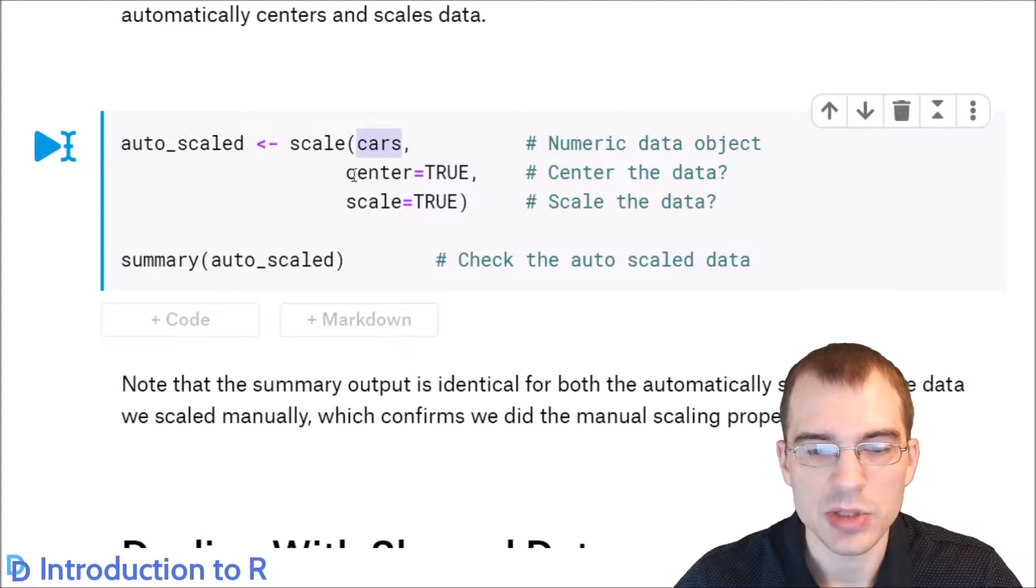Then you say do you want to center the data? If you do put true and if you want to scale the data set that argument to true. Then you simply run it and the data will be automatically scaled. Let's run this and view a summary of the data just to confirm that the different variables seem to be on the same numeric scales.